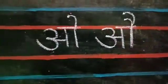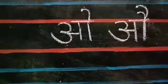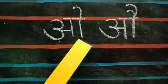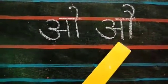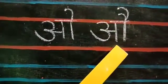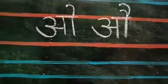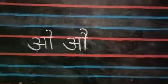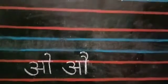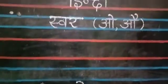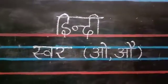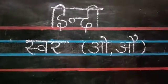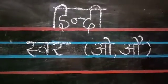Children, all of you look at the board. O — O se okli. Aau — Aau se aurat. Children, hope you all understood. Now open your Hindi notebook and write O se okli and Aau se aurat neatly. Thank you children.